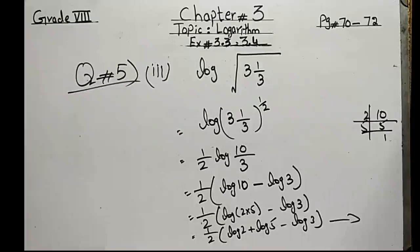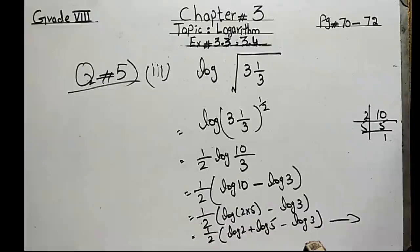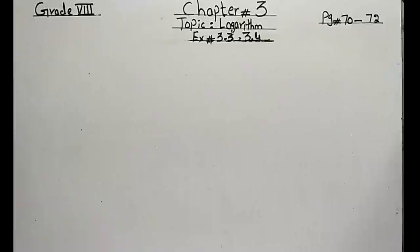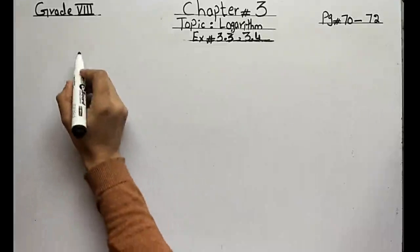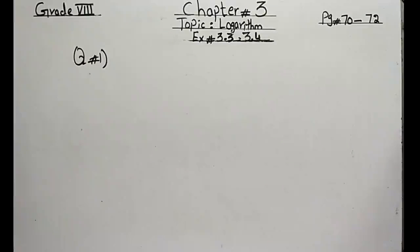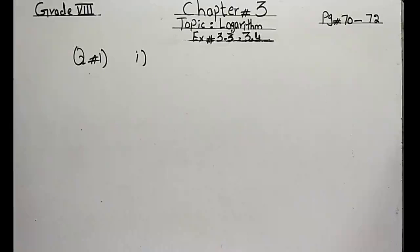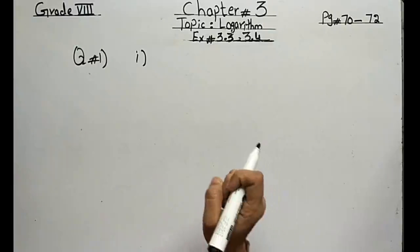The remaining parts of question 5 are your homework — they are easy. Now come to exercise 3.4, question number 1. Use log tables to find the value. There are 8 parts; I will do any 2 parts and the rest you will do yourself.